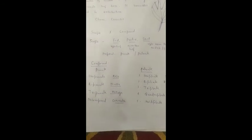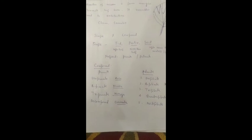Pinnate اور palmate leaves compound بھی ہو سکتے ہیں۔ Compound pinnate leaf میں یہ types پائے جاتے ہیں: unipinnate — جیسے rose اور acacia میں؛ bipinnate — جیسے mimosa (touch-me-not) میں؛ tripinnate — جیسے moringa میں؛ اور decompound — جیسے coriander اور carrot کے plants میں۔